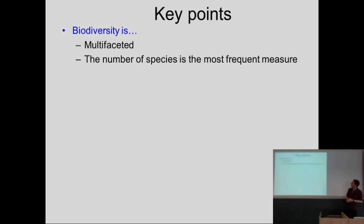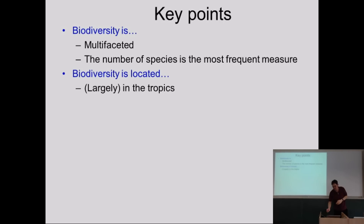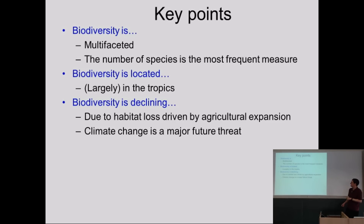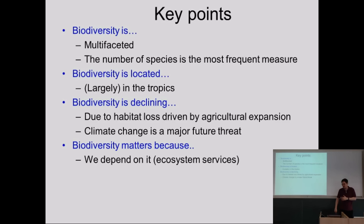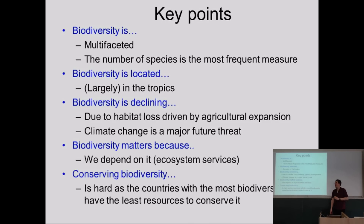To summarize: biodiversity is multifaceted — the number of species is the most frequent measure, but there are lots of ways of looking at it. Biodiversity is broadly in the tropics. It's declining, and the issue isn't that it's declining per se, it's the rate of decline that's the problem. Agricultural expansion — as in habitat loss from forests, savannas, and so on — is the biggest current driver. Climate change is a major future threat. And biodiversity matters because we depend on it. Conserving biodiversity is hard because the countries with most biodiversity have the least resources to conserve it. Does anyone have any questions?